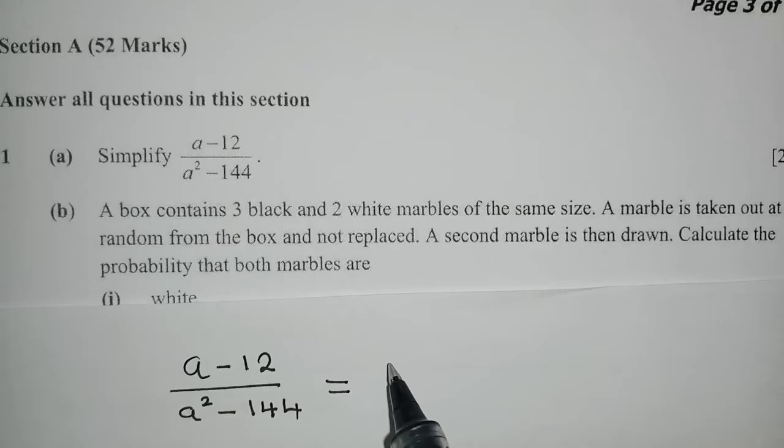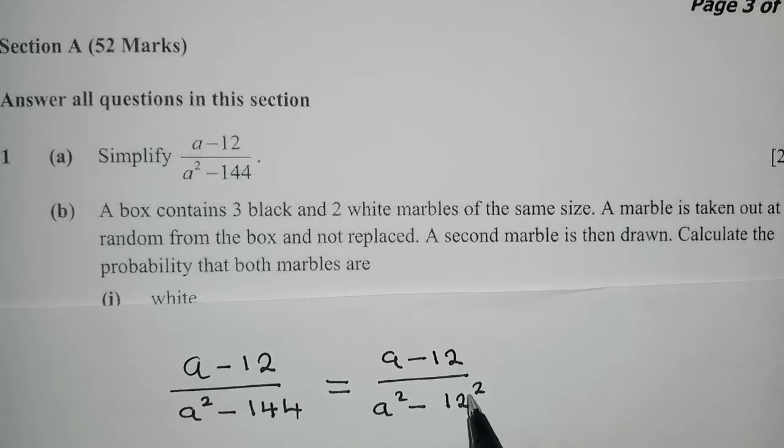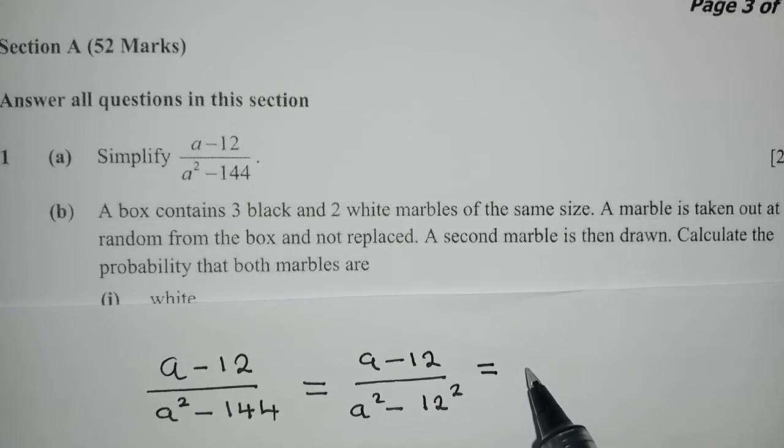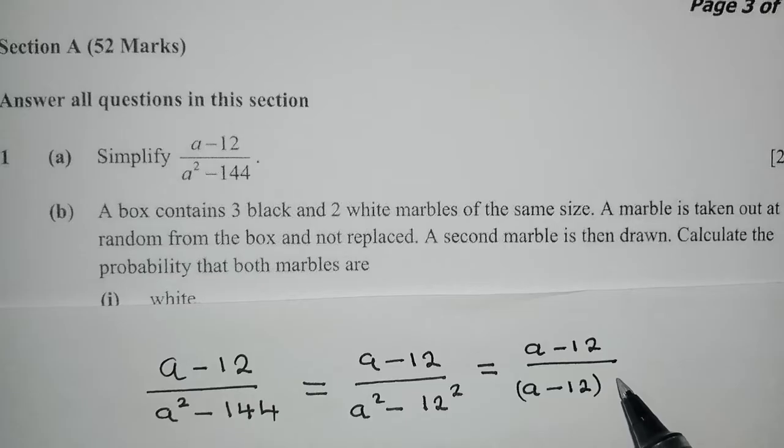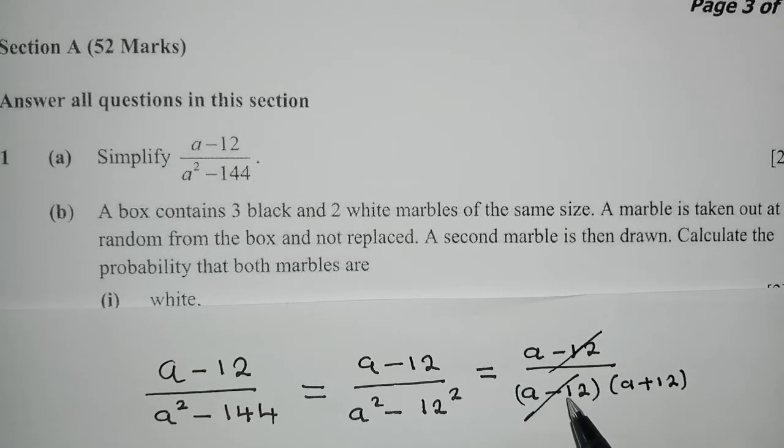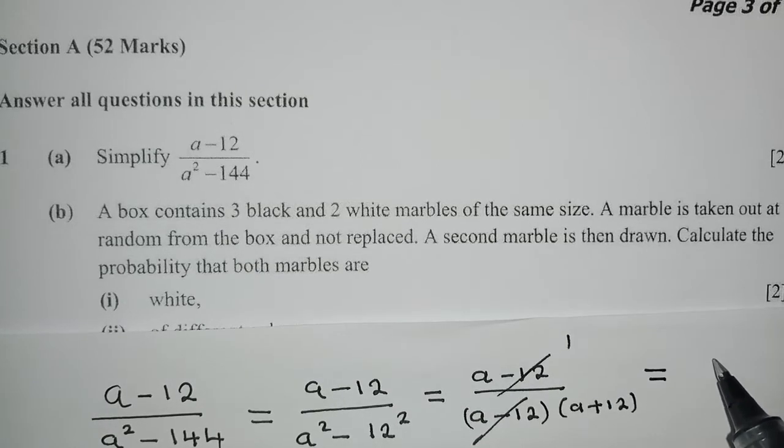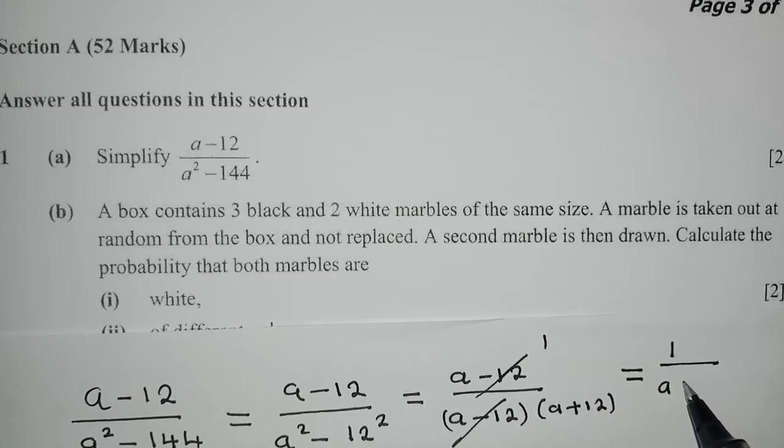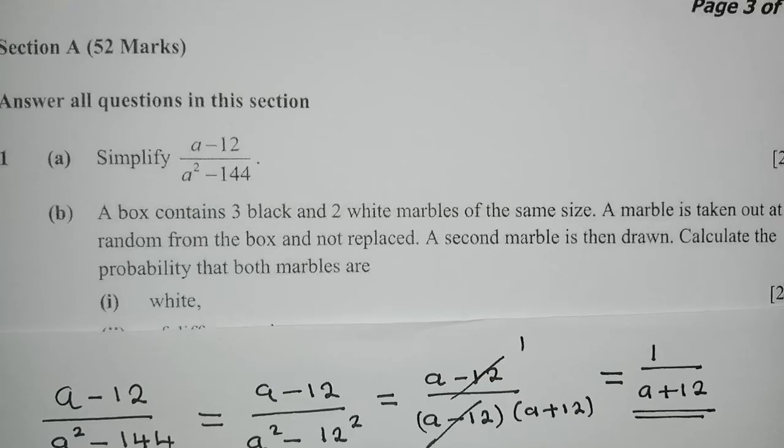We can use the idea of a difference of two squares down here, where a squared minus 144 will be 12 to the power 2. This and this are just the same. Here, we write this the way it is, this is how difference of two squares is done. We know that this is common, and this. So we can cancel here, and here we cancel. We remain with one, where our answer will just look like this. This is our answer.